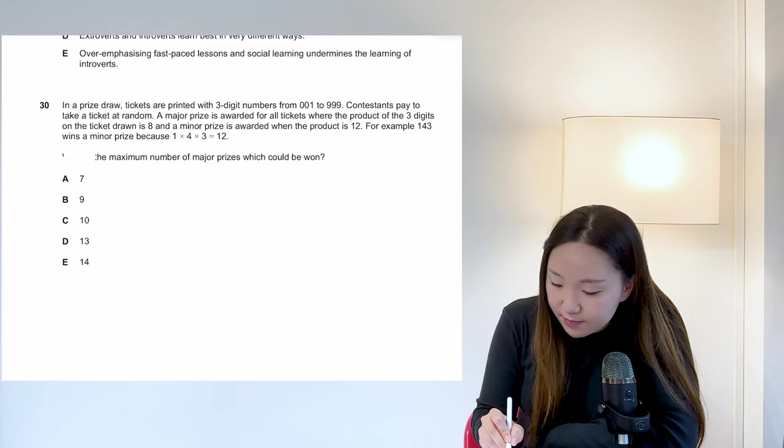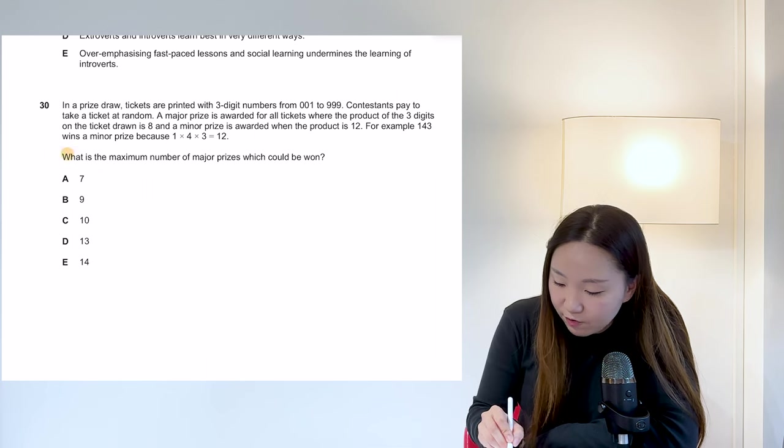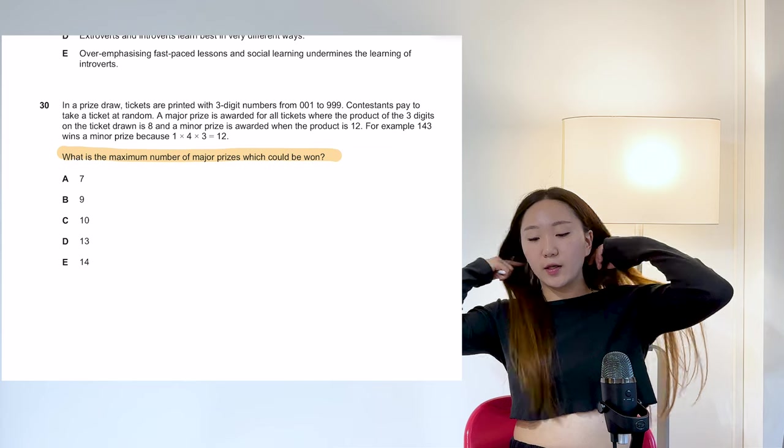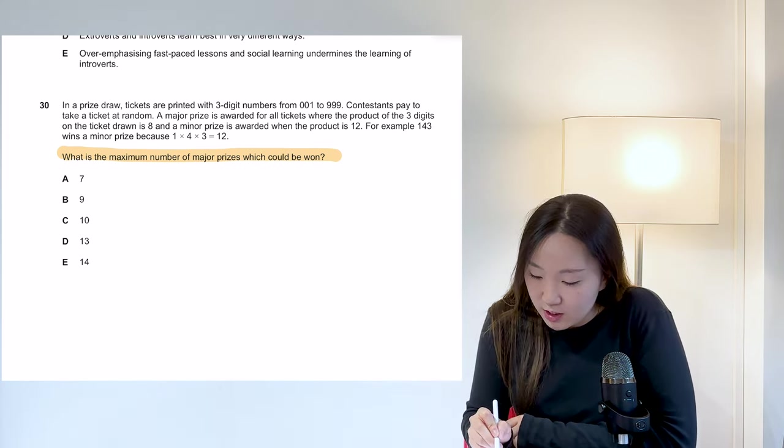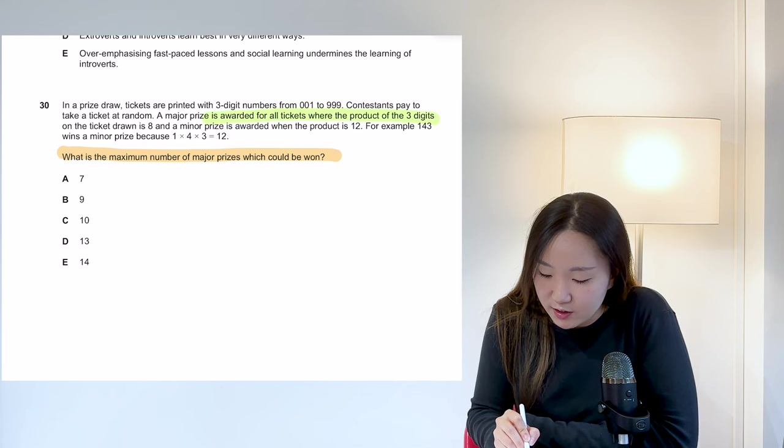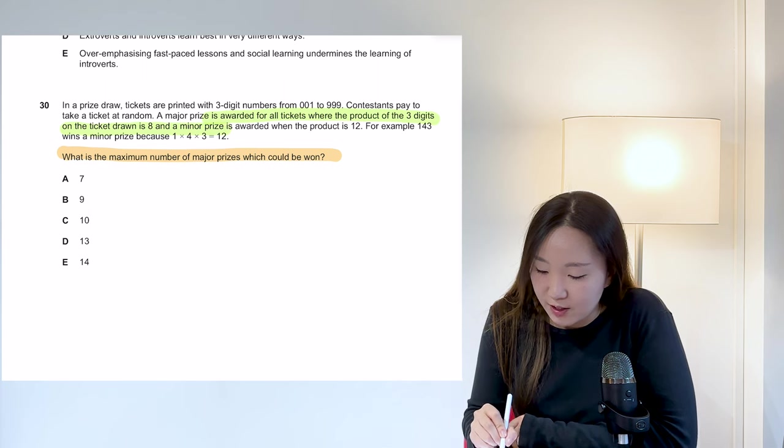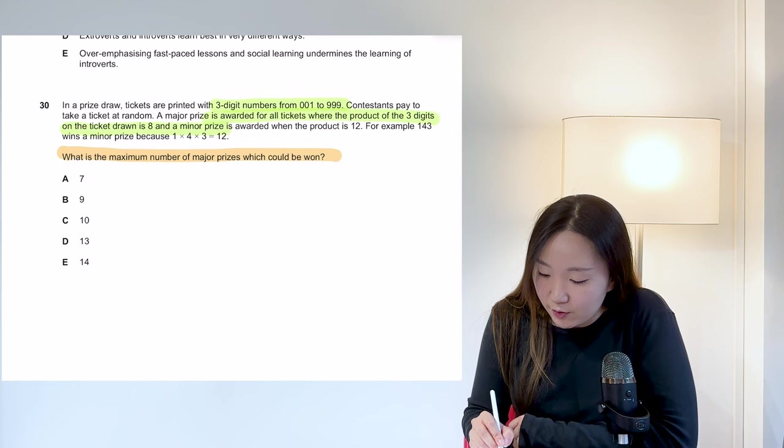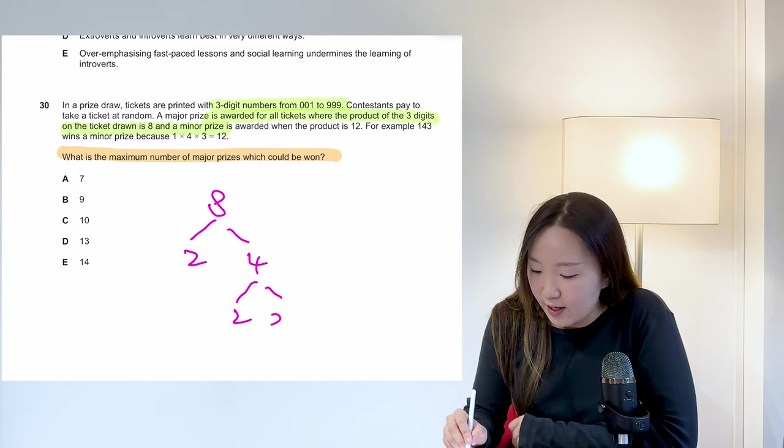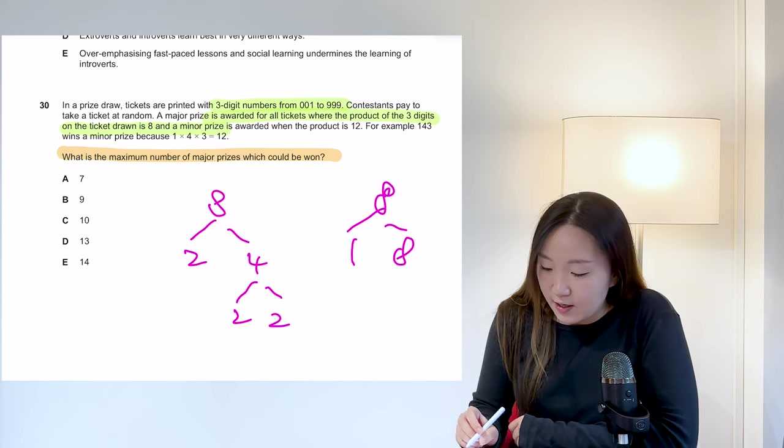Okay. What is the maximum? What is the maximum number of major prizes, which could be won? So let's figure out how a major prize is won. So a major prize is awarded for all tickets by the product of the three digits on the ticket drawn is eight and minor prize, we don't care. So three digit numbers from 001 to 999. So eight is what we have to try and make. So that could either be that or that it's three numbers. So it's either going to be one, one and eight, or it could be two, two, two, or it's going to be some combination of one, two, four basically.